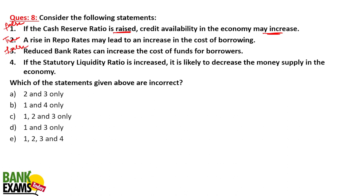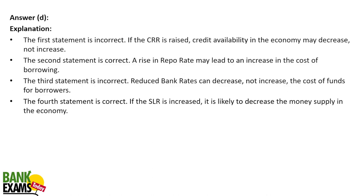If SLR (Statutory Liquidity Ratio) is increased, it is likely to decrease the money supply in the economy — this is true. If the SLR is increased, banks need to hold more money relative to deposits, so they will give less money into the economy, resulting in decreased money supply. Higher the SLR, less money in the market. So statements one and three are false; the rest are true.